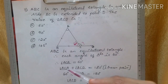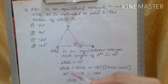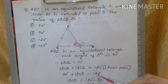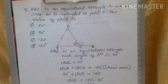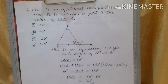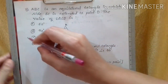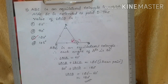Angle ACB + angle ACD = 180 degrees because they form a linear pair. So angle ACD = 180 − 60 = 120 degrees. Option C, 120 degrees, is the right answer.